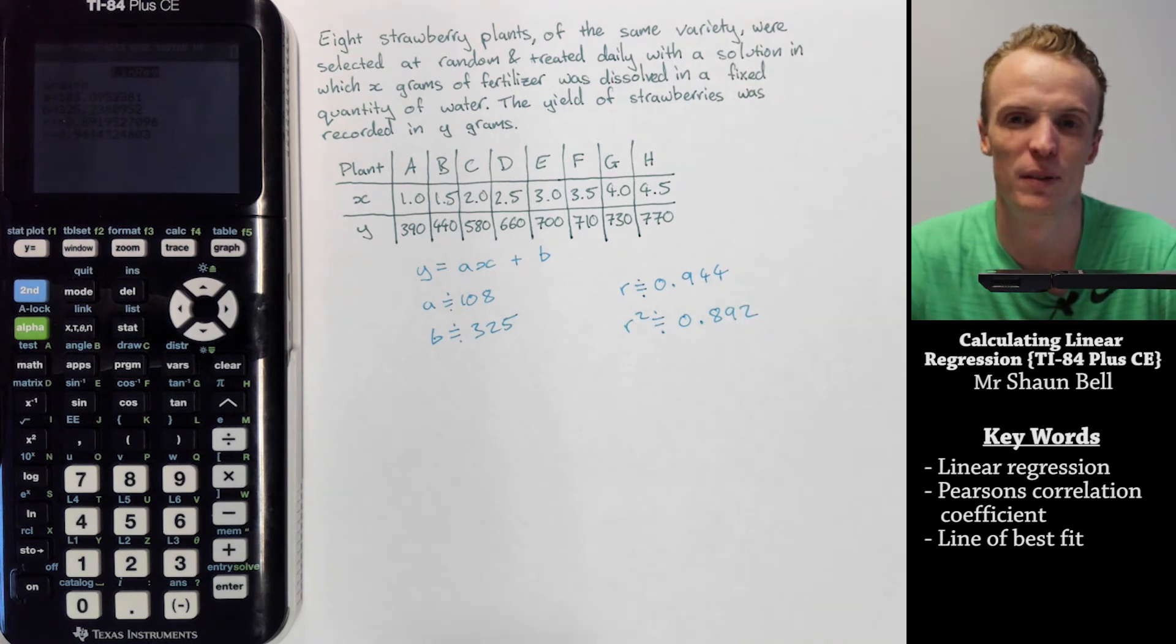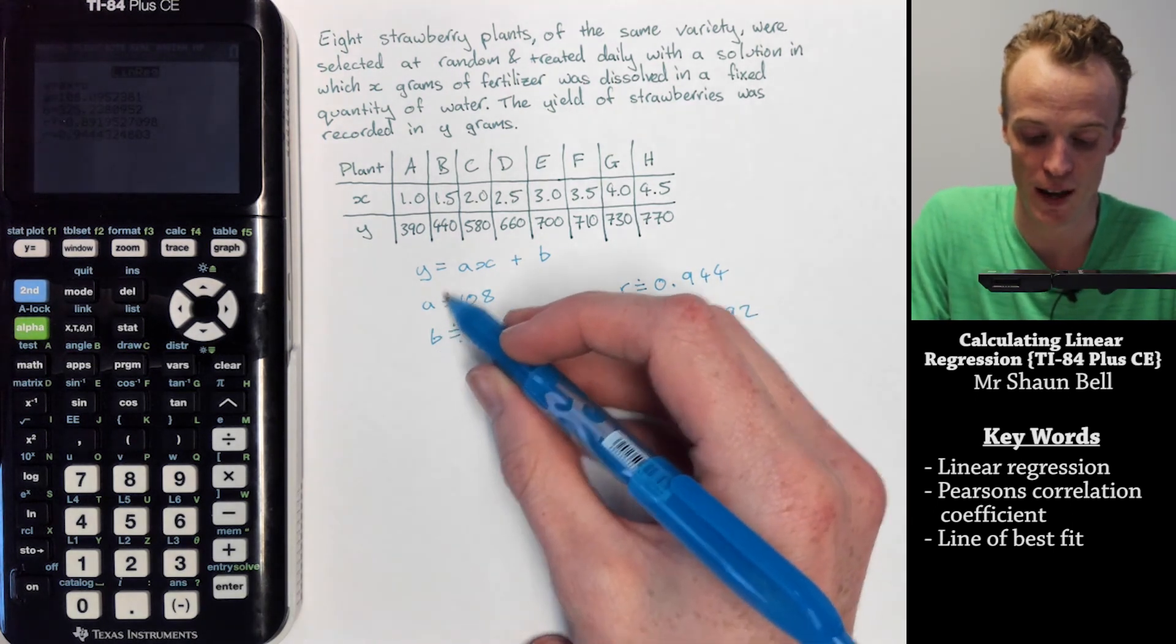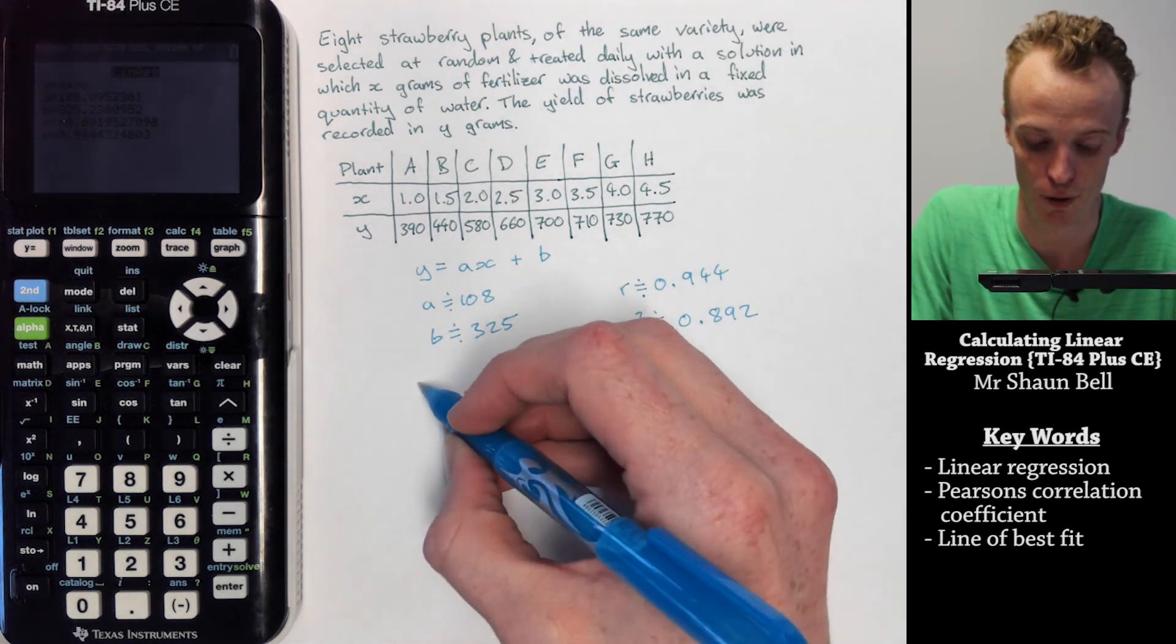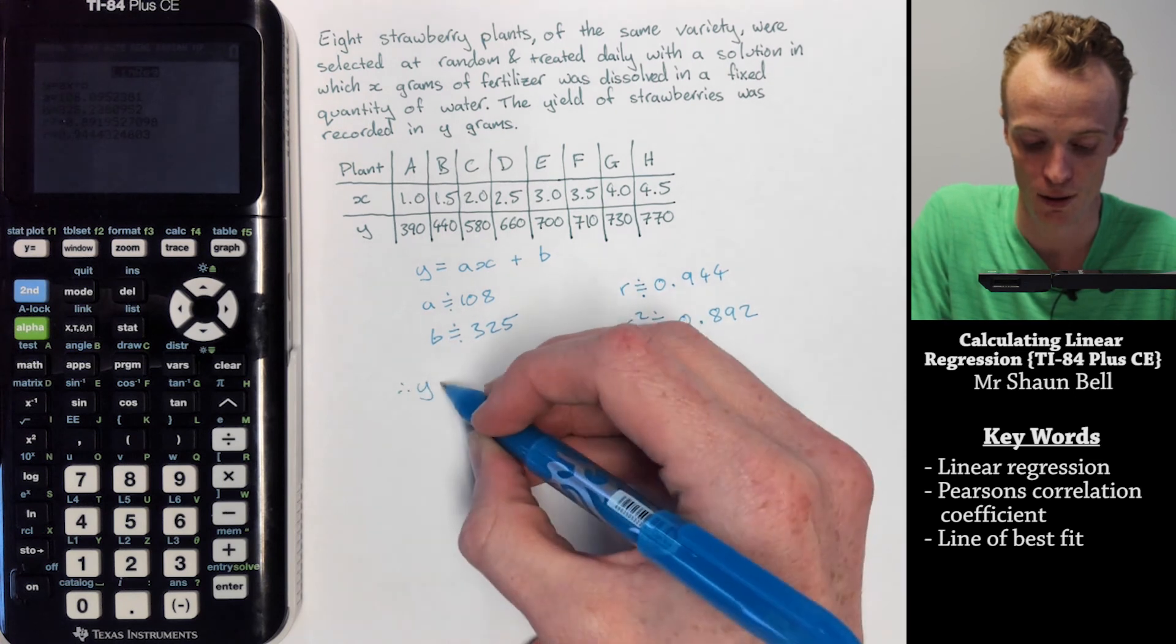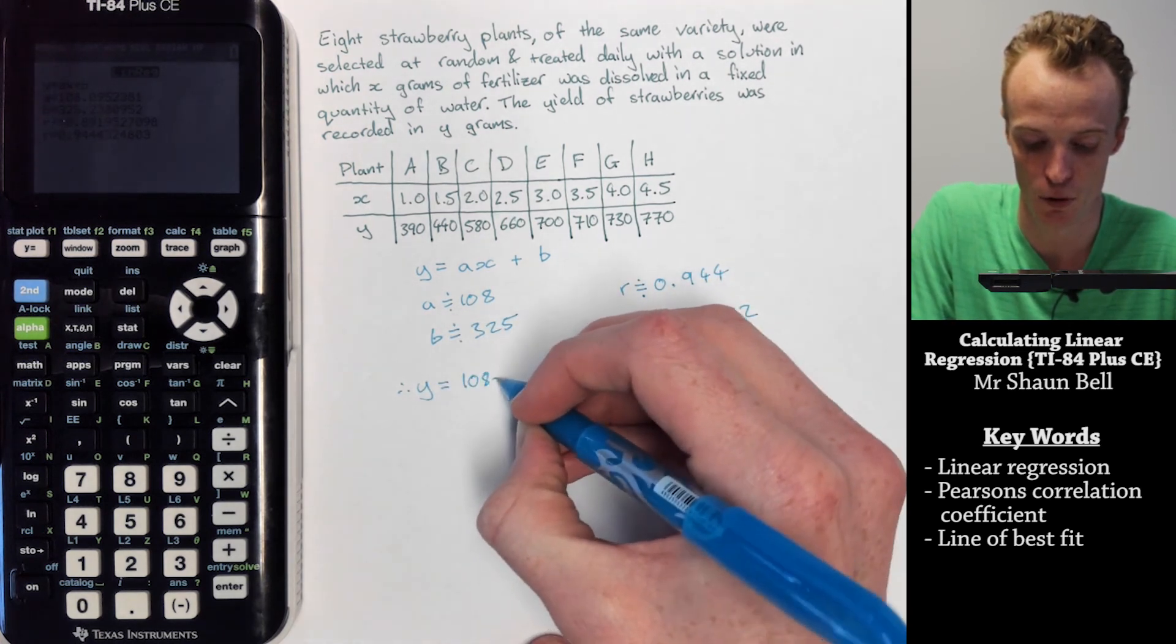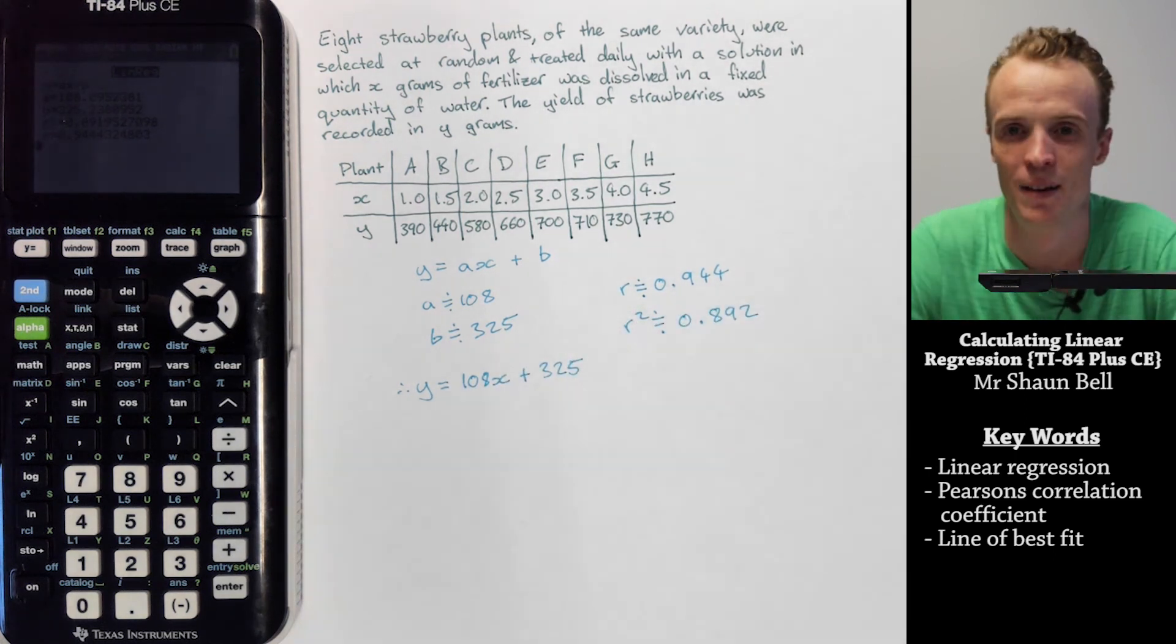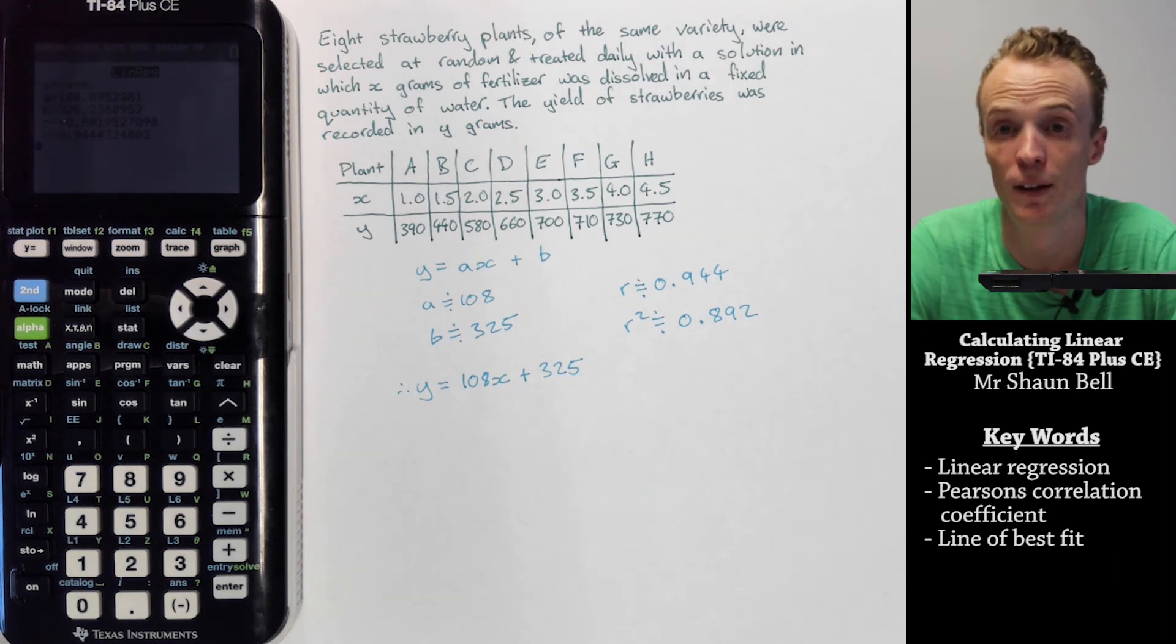But now we can represent our line of best fit, or our linear regression model, as an equation by substituting the a and the b value here. So our y is going to be equal to 108 multiplied by x plus 325.